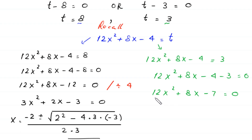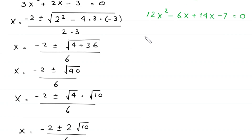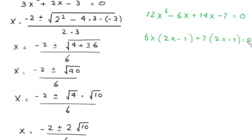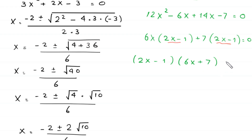This quadratic equation is factorable. We write 12x² and break 8x into negative 6x plus 14x, giving 12x² - 6x + 14x - 7 = 0. From the first two terms we factor out 6x, leaving (2x - 1). From the last two terms we factor out 7, leaving (2x - 1). So we get (6x + 7)(2x - 1) = 0.